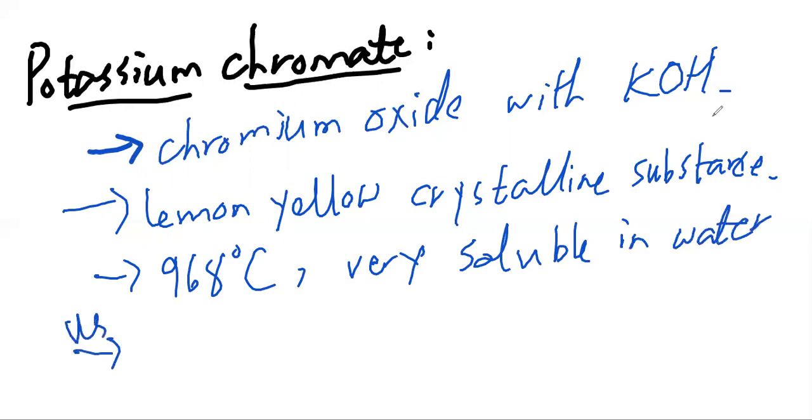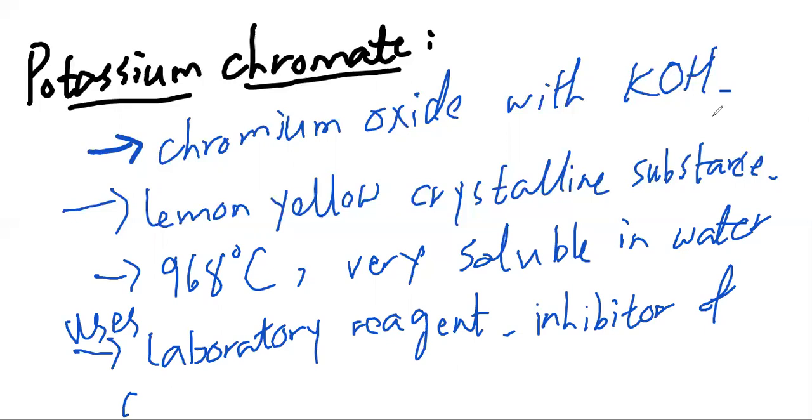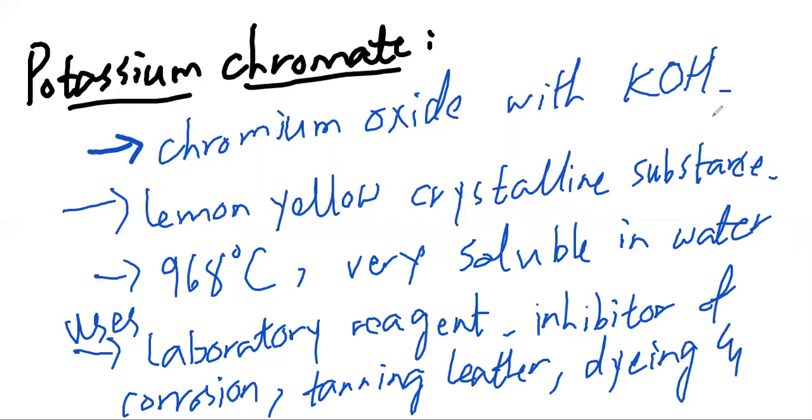Further, its uses are: used as a laboratory agent and as an inhibitor of corrosion. Also used in tanning leather, dyeing, and manufacture of chrome yellow PbCrO4. This was potassium chromate.